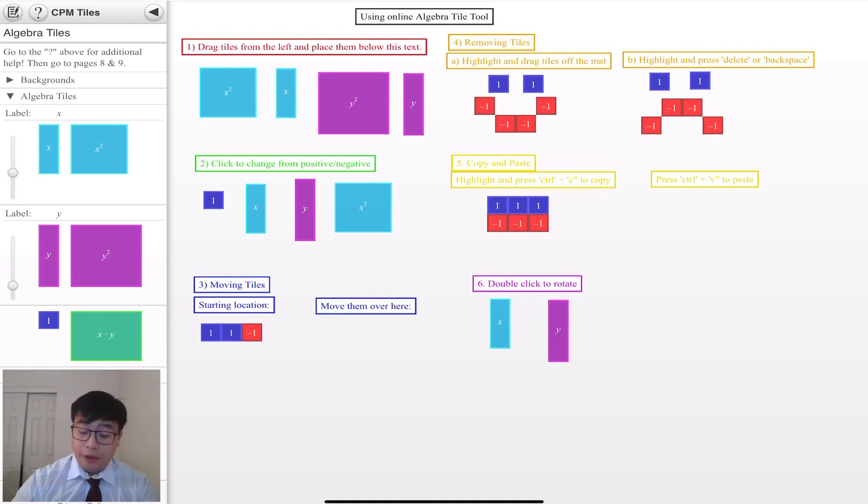The fourth thing I want to show you guys is removing tiles from the mat. So there are two different ways you guys can remove tiles from the mat. You guys can highlight the entire tiles and drag them off the screen and that will get rid of them. Or you guys can highlight them and click the delete button on your keyboard.